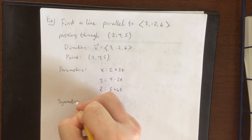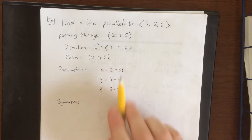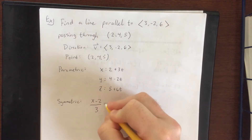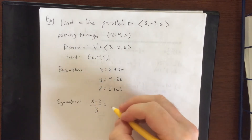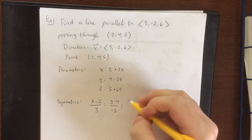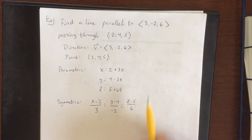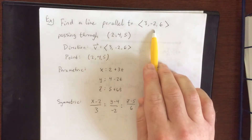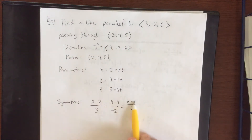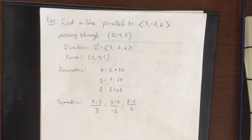For the symmetric form, we solve all three parametric equations for t. In the x equation, subtracting 2 and dividing by 3 gives (x−2)/3. In the y equation, we get (y−4)/(−2). And for z, we get (z−5)/6. The three denominators — 3, −2, and 6 — are components of the direction vector, and the values 2, 4, 5 in the numerators are the point the line passes through.